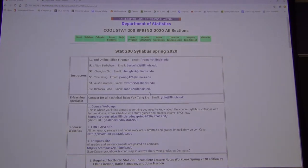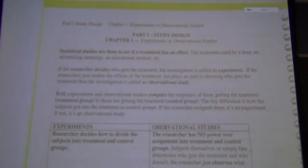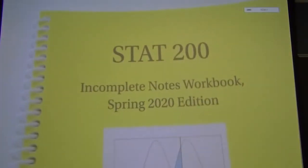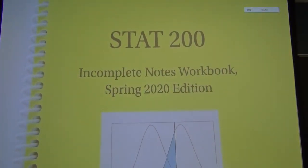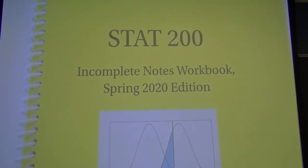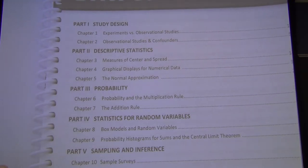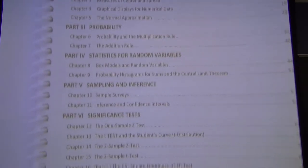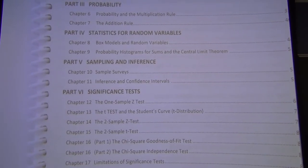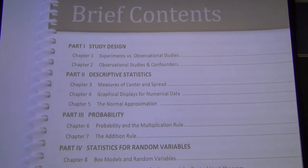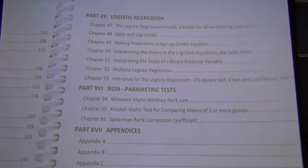Going to the document camera. This is the book you need — the yellow Spring 2020 version, available at the bookstore. From the table of contents, there are a lot of topics. Up until about the first exam there's a lot of overlap with STAT 100, which is good for review. The rest of the course will mostly be new.